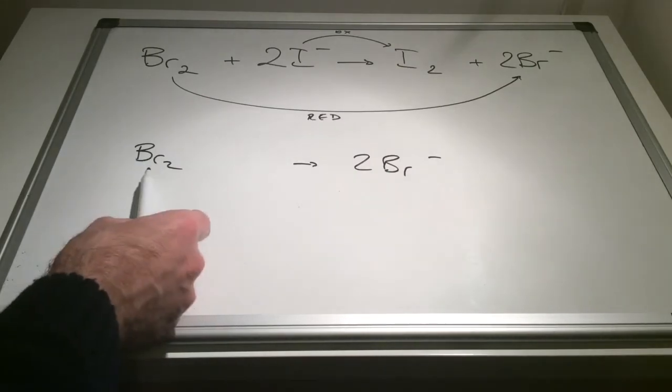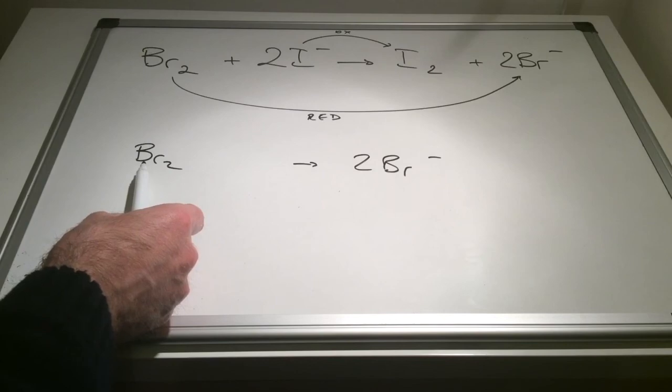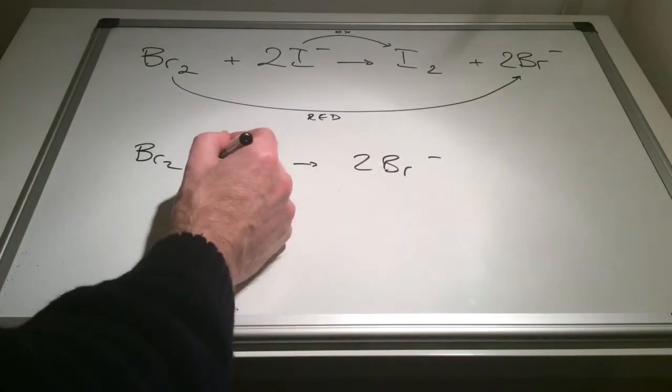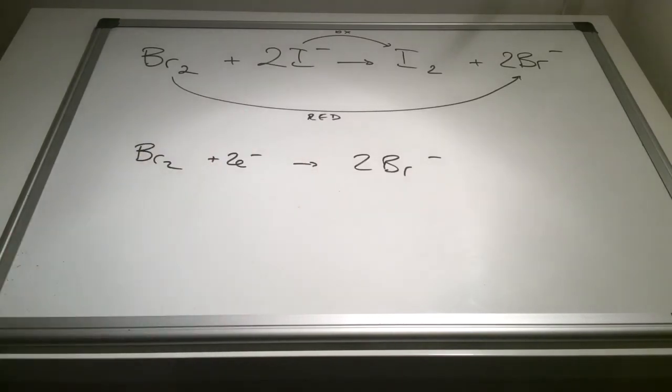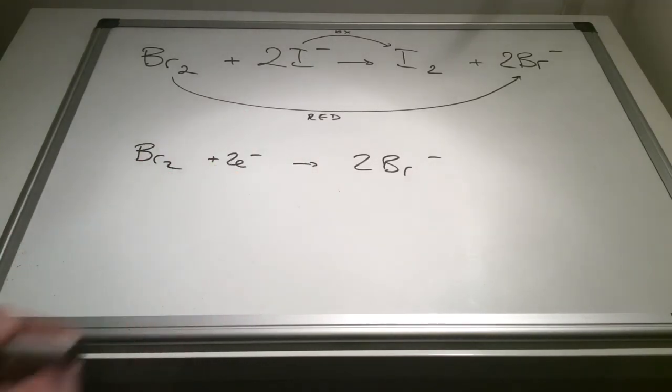If you can visualise the dot and cross diagram, we've got to give each of those separate bromine atoms that are making up the molecule an extra electron to become these two isolated bromide ions. So we need to gain two electrons here. Gain of electrons, so that's reduction.